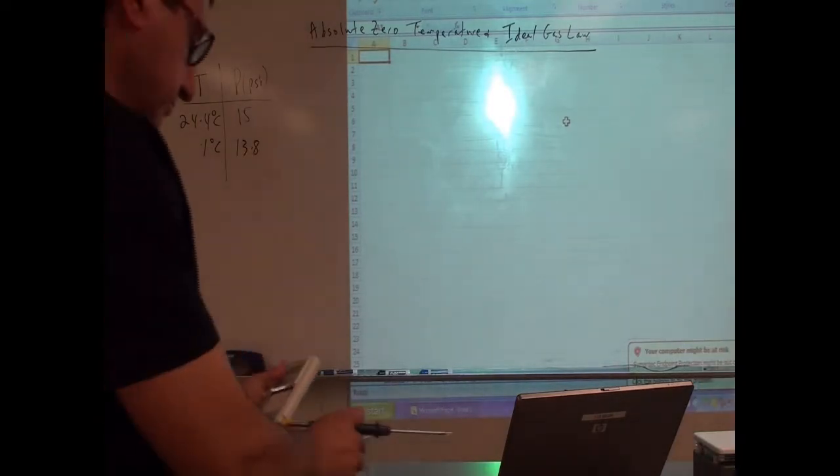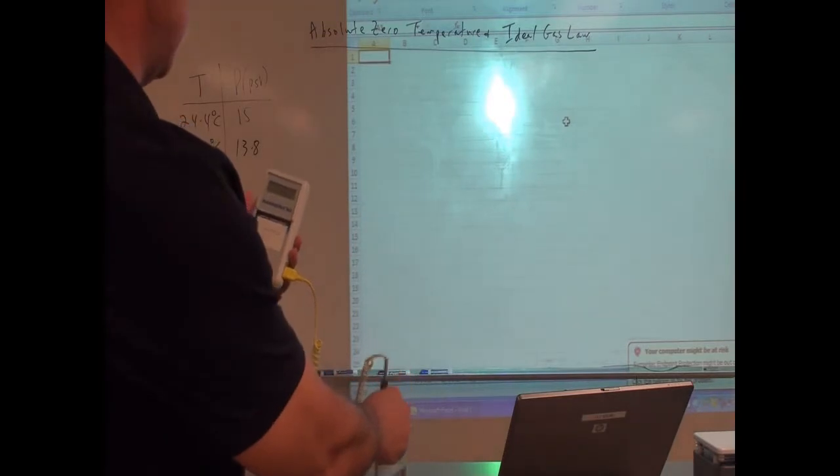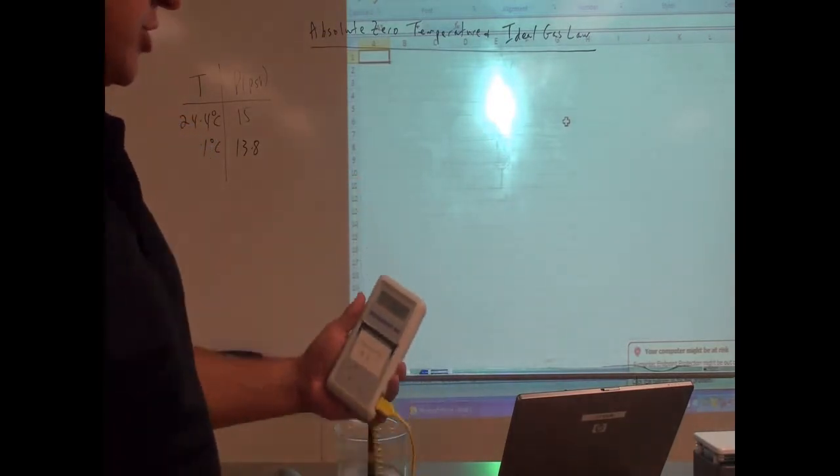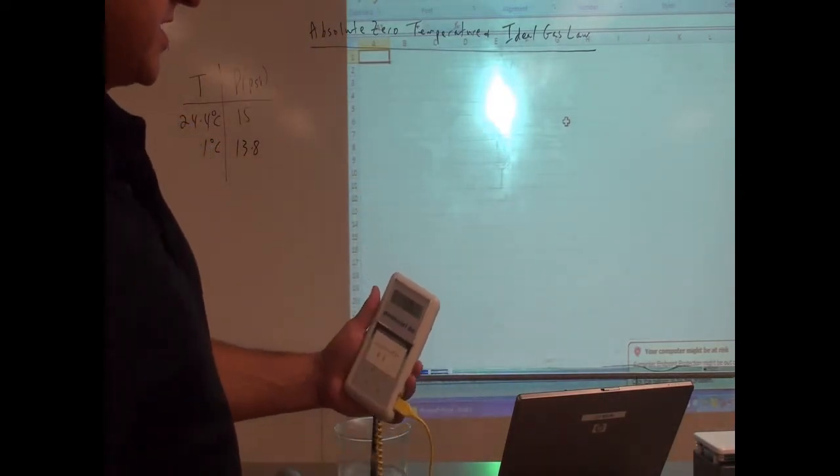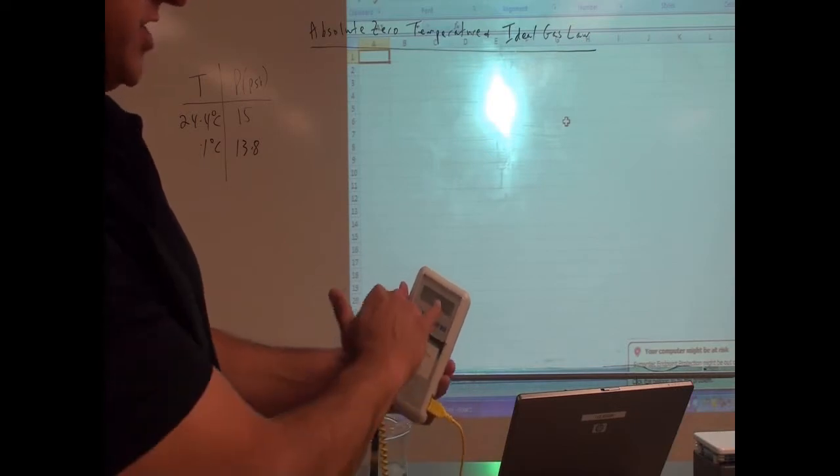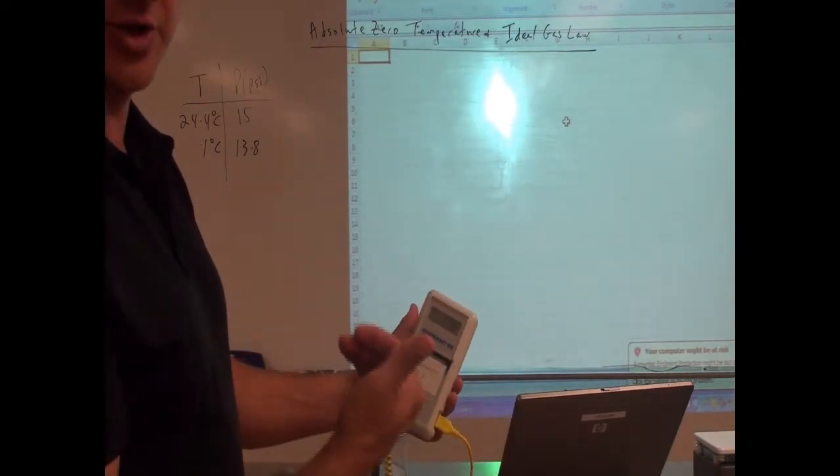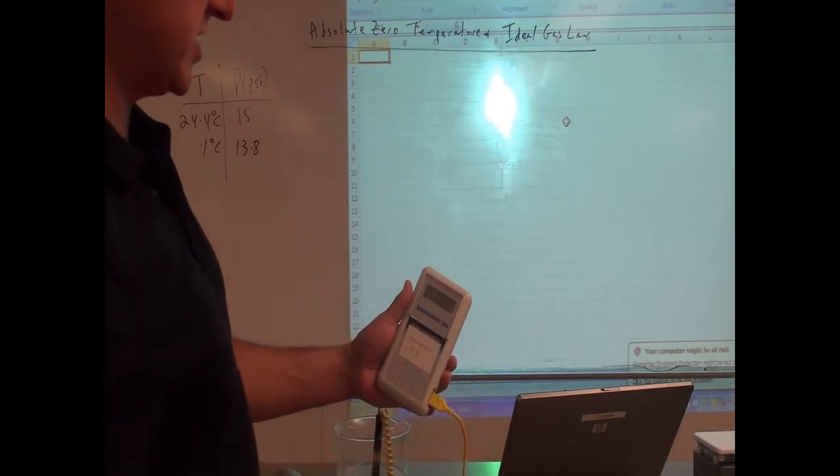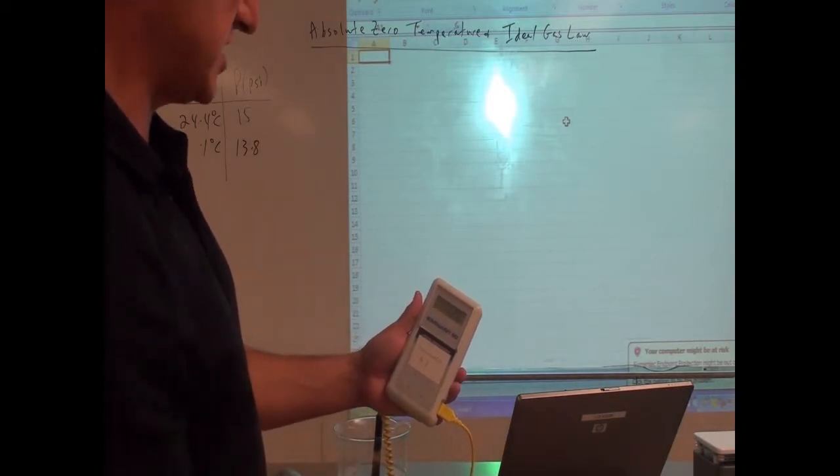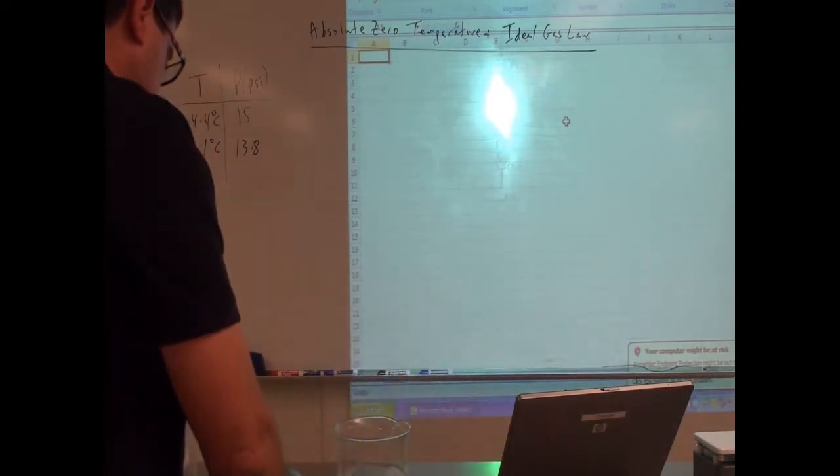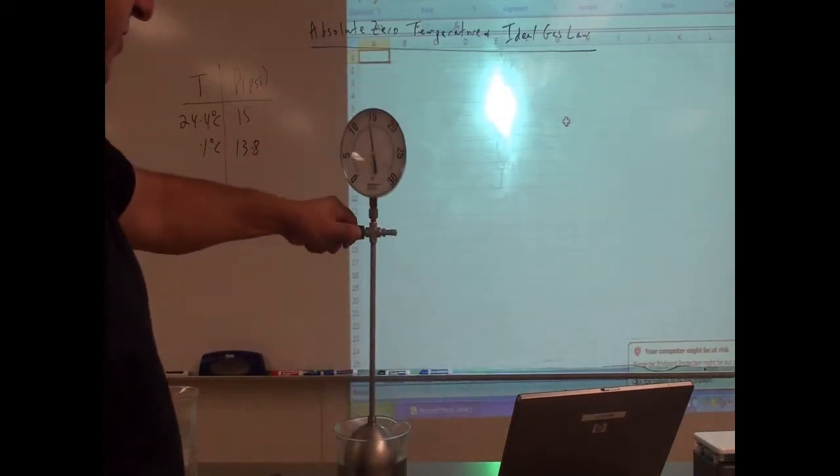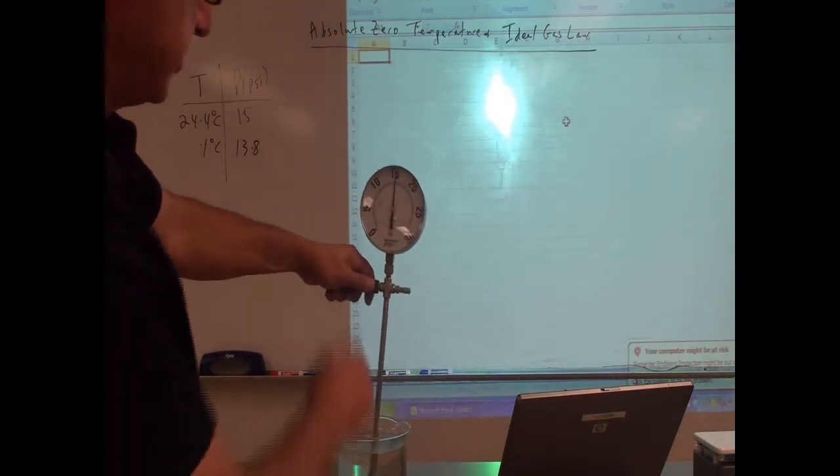Then I'll measure the temperature of my hot beaker of water. So the temperature is going to go way, way up. It's got to be 73.0. 73.0 Celsius. But of course it's going to drop quickly so I should do this quickly. So it's going to be 72 point right now, 72.6. And immediately determine the pressure.